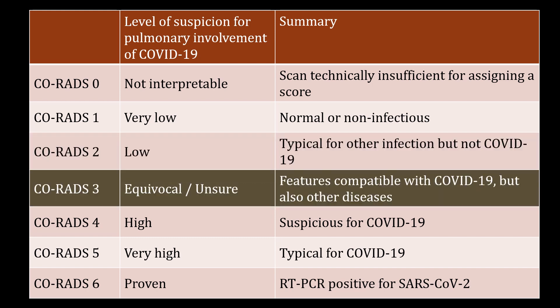CORADS-3 implies equivocal findings for pulmonary involvement of COVID-19 based on CT features that can also be found in other viral pneumonias or non-infectious etiologies. Findings include perihilar ground glass, homogenous extensive ground glass with or without sparing of some secondary pulmonary lobules, or ground glass together with smooth interlobular septal thickening with or without pleural effusion in absence of other typical CT findings.